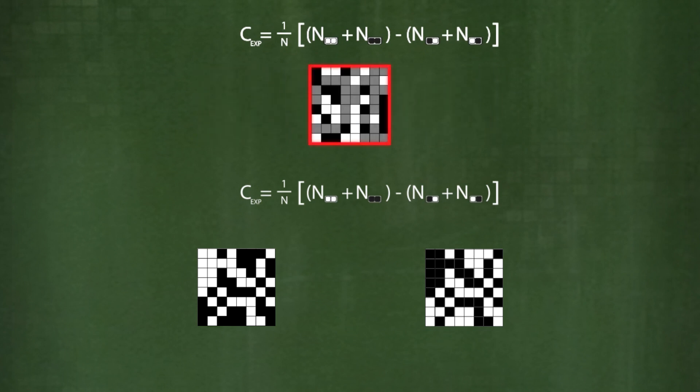To establish that, we count up how often the measurements of Alice and Bob match and how often they differ. The difference between the number of matching and different measurement results is the experimentally determined correlation function c.